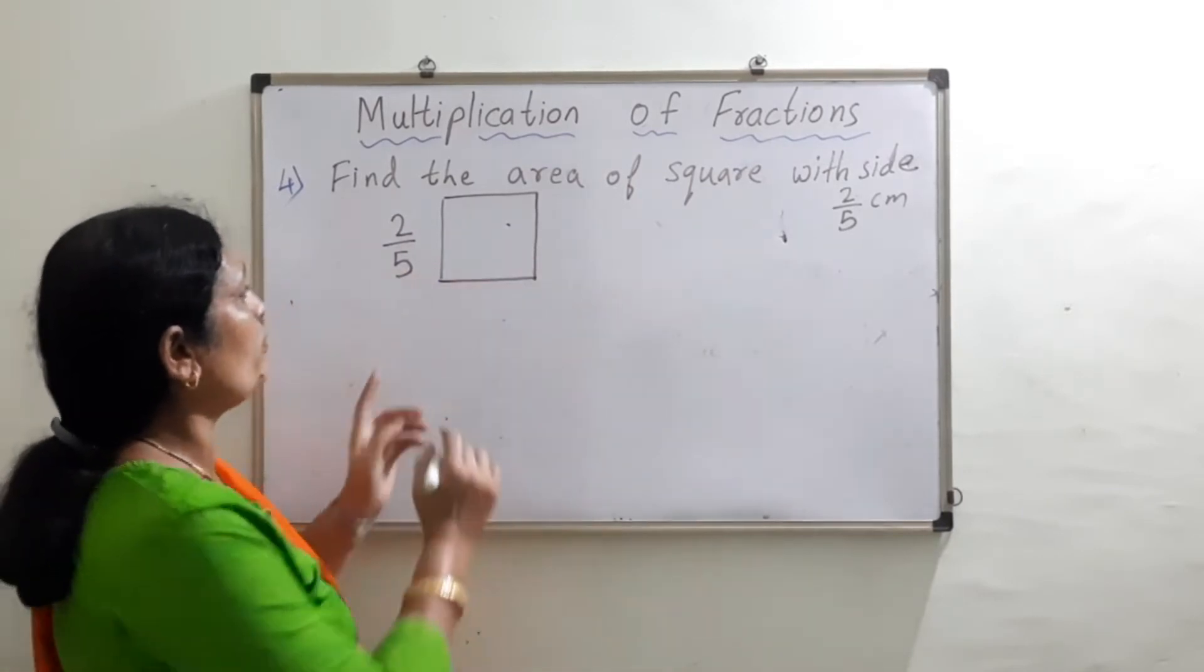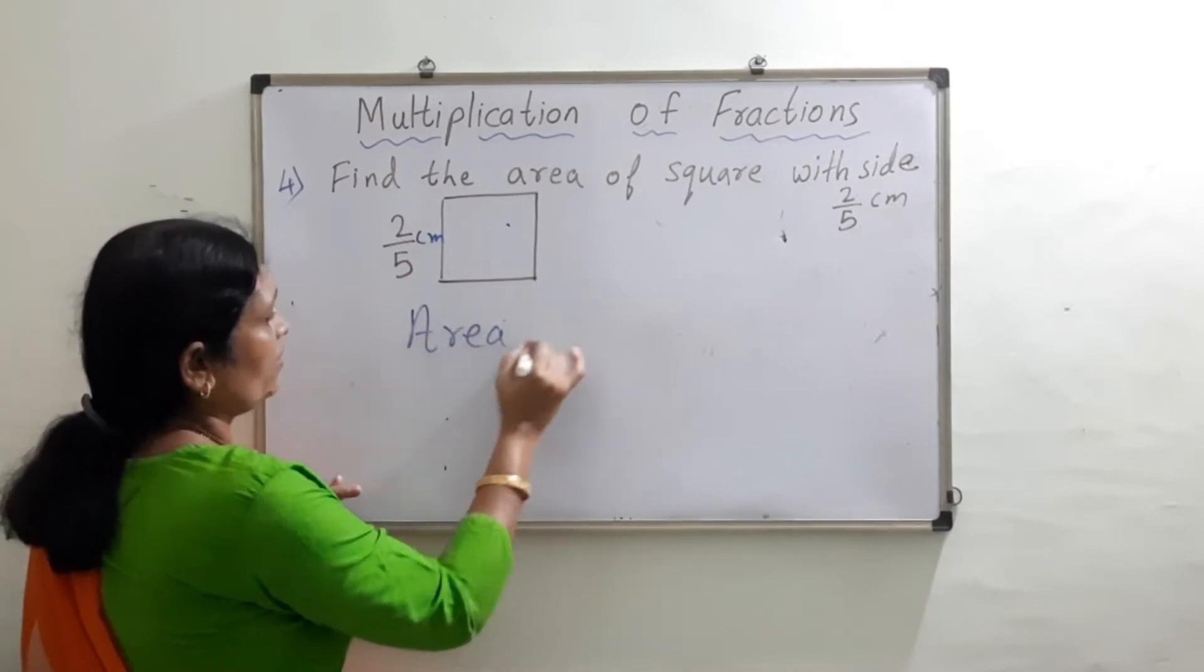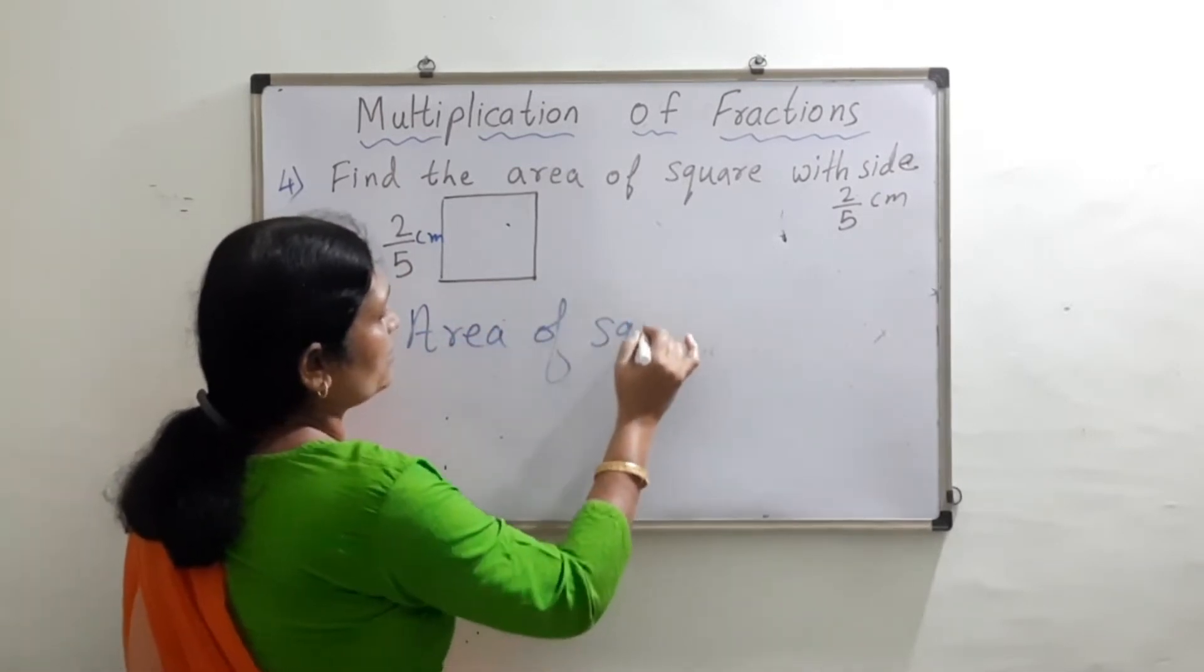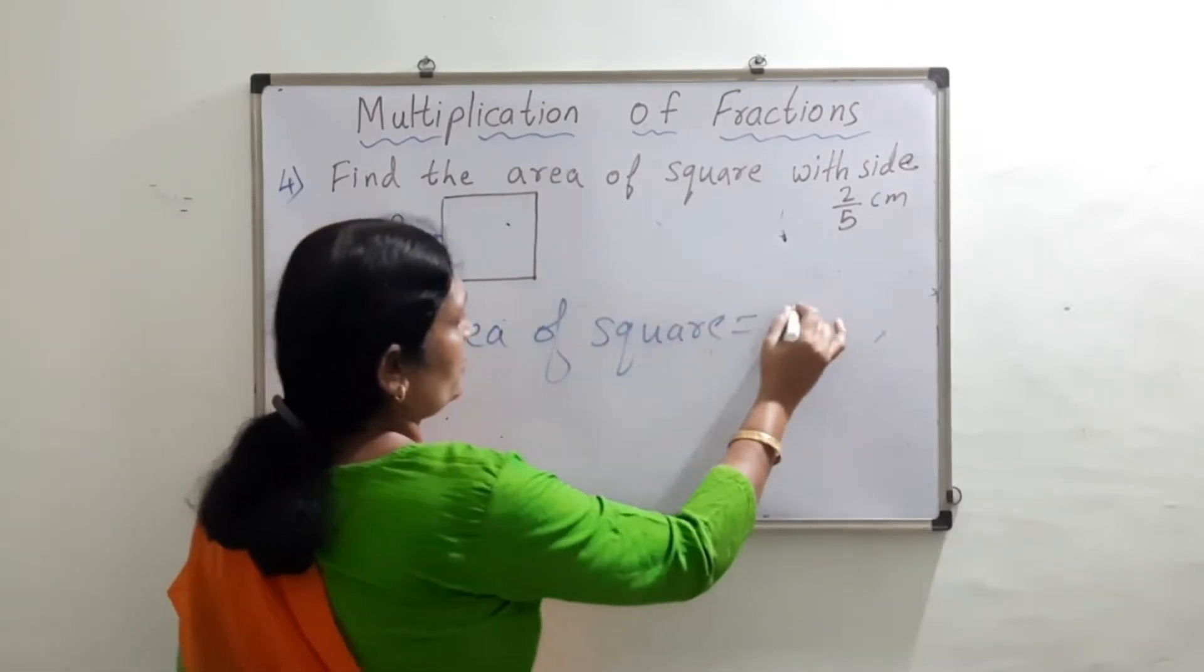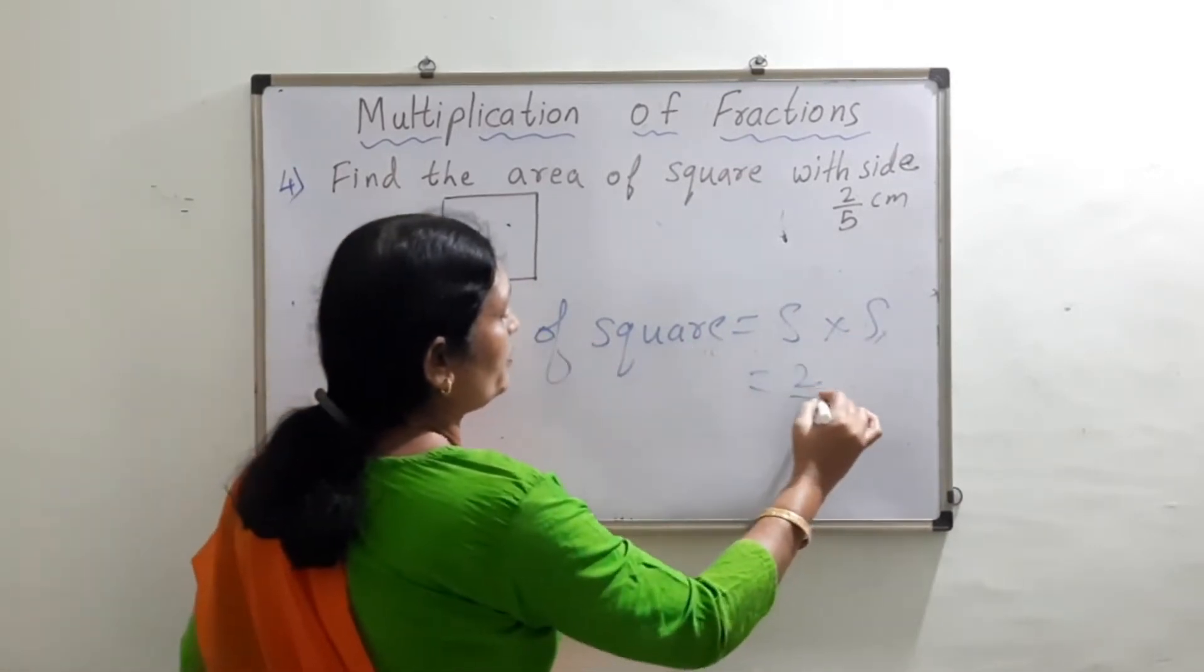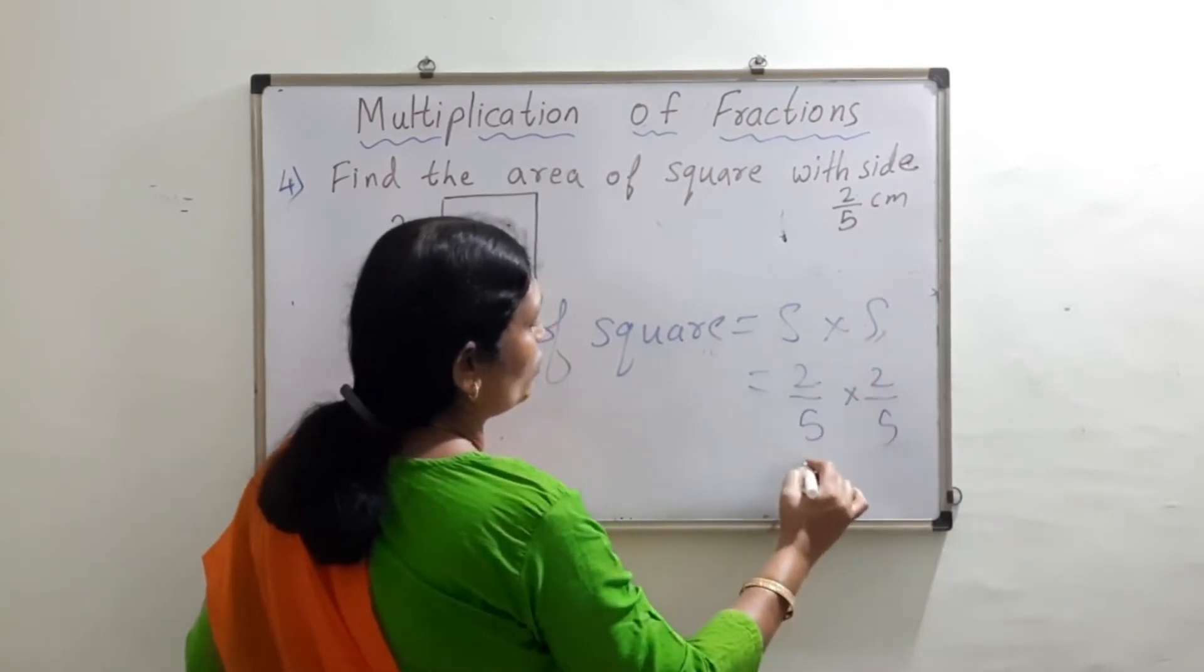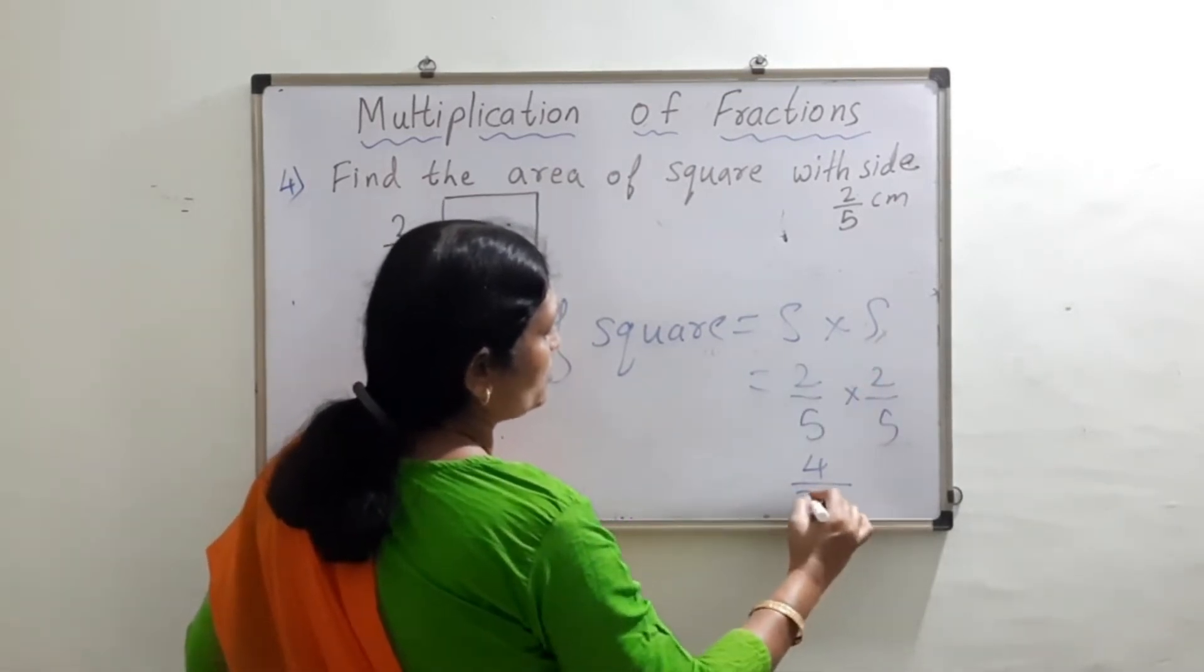Okay, let us find the area of the square with side 2 upon 5 centimeter. So we know that area of square is equal to side into side. Side is given as 2 by 5, so we will be simply multiplying 2 by 5 into 2 by 5. 2 into 2 is 4, and 5 into 5 is 25.